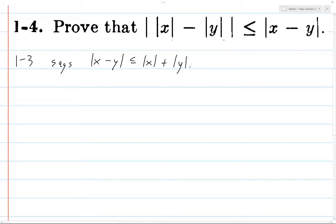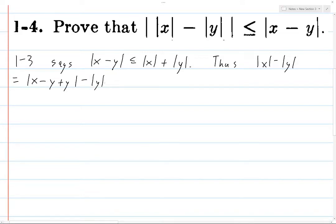This is really important because we end up being able to use this a lot. For example, if you look at this difference here, x is the same thing as x minus y plus y, because minus y plus y equals 0. And we can put x minus y in parentheses to indicate that's a distinct thing, because we can now use the inequality from 1-3 to break it up — this is less than or equal to the norm of x minus y, plus the norm of y.